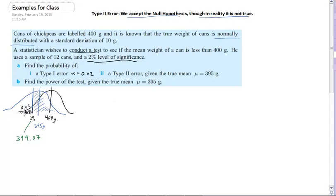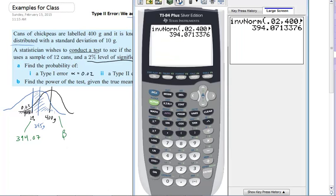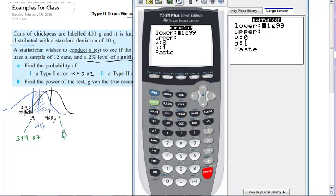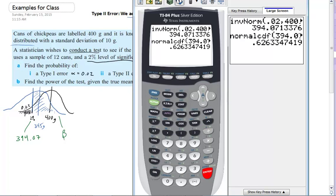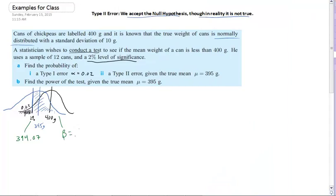So that means that this 2% here is 394.07. Now that's going to be important now because now I'm going to go and I'm going to use that same number to find the probability of this right here, which is beta. So I'm going to find the normal. So I'm going to go second distribution, normal CDF. Now this time I know I'm going to go from 394.07 all the way up to 1 times 10 to the 99th because I do want to go all the way up this time. Anything I get on this side is going to be in the acceptable region for my hypothesis, which means I'll accept it even though it's wrong. And then mu, of course, will then be 395 and standard deviation will be the same. So 10 divided by the square root of 12. And we go in and we get 0.626.